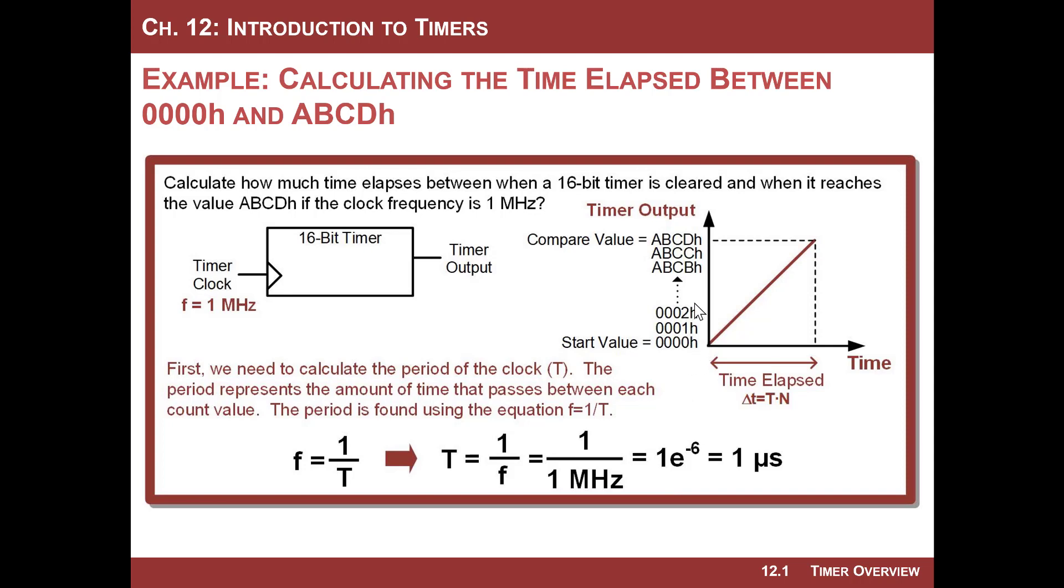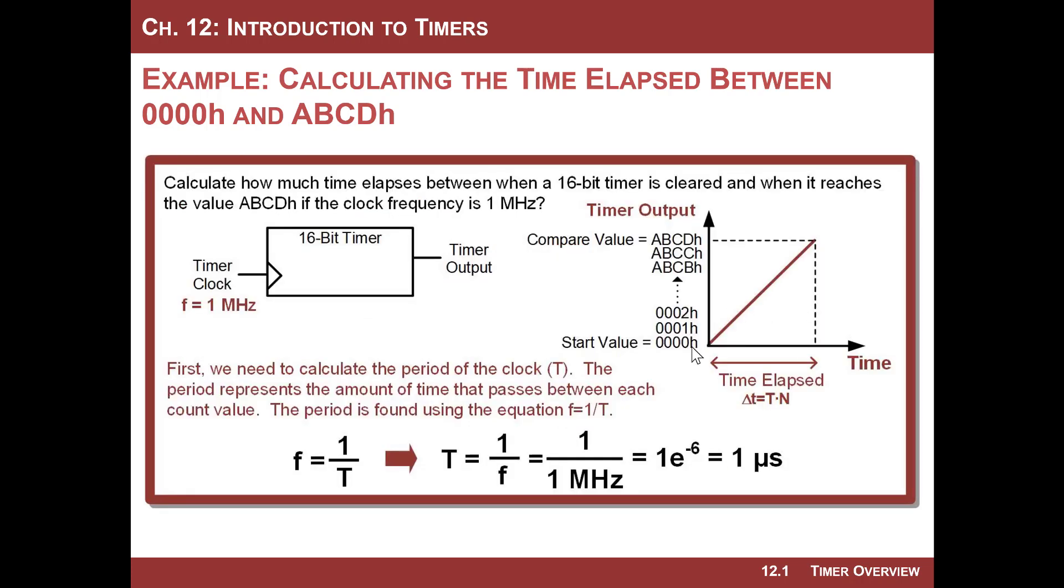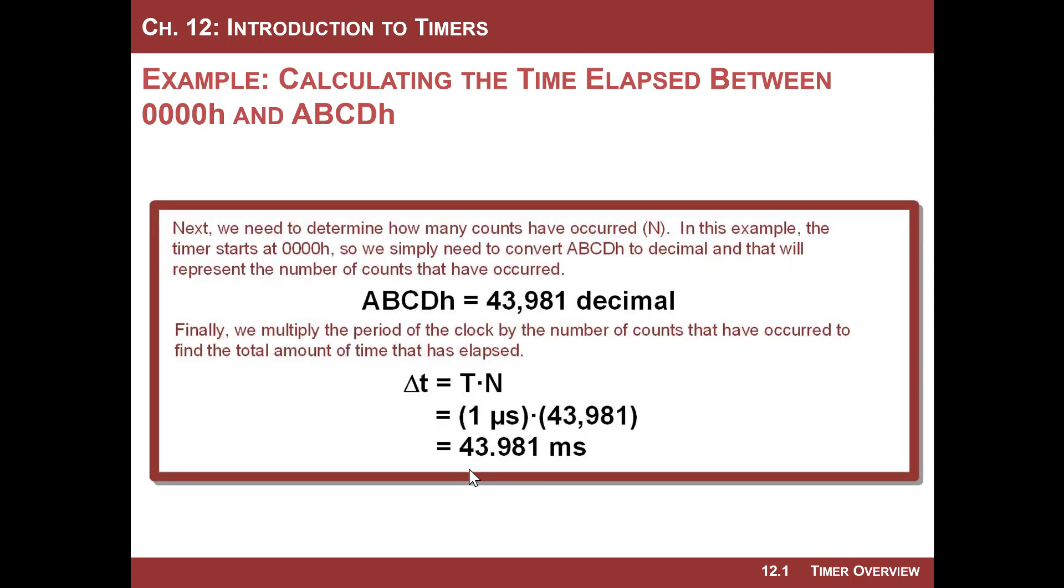So every microsecond, the count value increments by 1. Then all I need to do is multiply that by the count that I'm going to, which is ABCDh. We flip that into decimal to make the multiplication easier, which happens to be 43,981. And then all we do is basically multiply that number by 1 microsecond, and we have found that 43.981 milliseconds have transpired between when the counter started at 0 and got up to ABCDh. So we calculated real time.